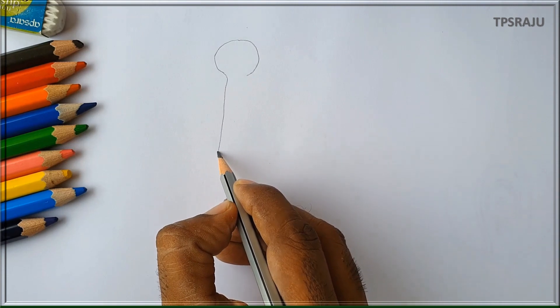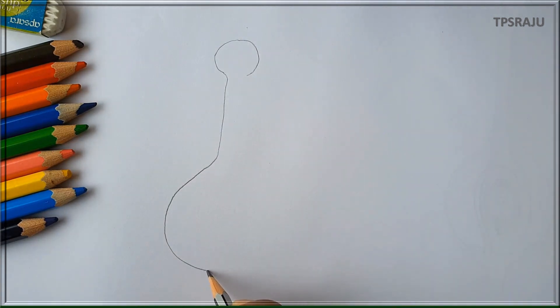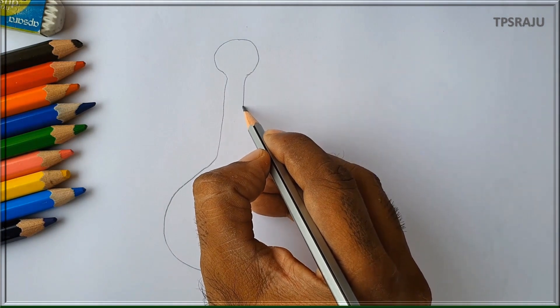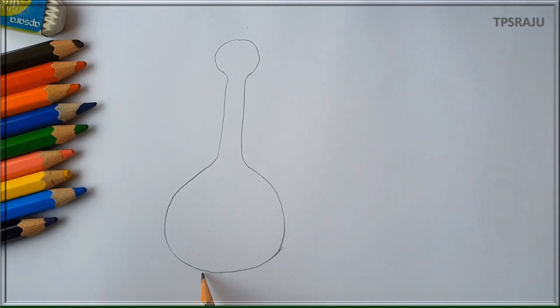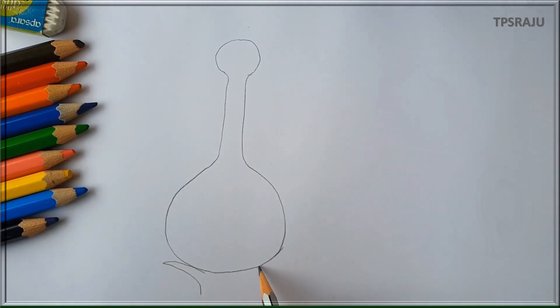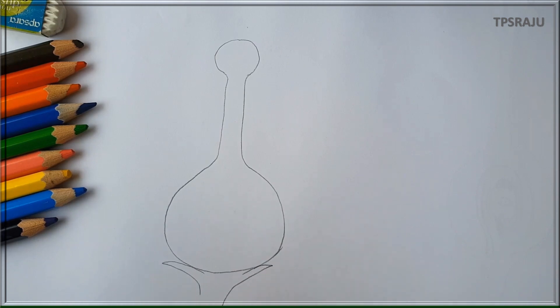Double fertilization in plants occurs in the gynoecium of the flower. So first we have to draw gynoecium or carpel. This is carpel.